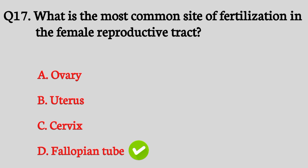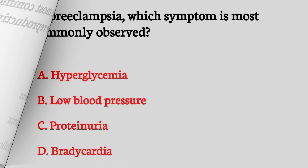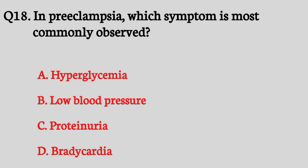Question number eighteen. In preeclampsia, which symptom is most commonly observed? The right answer is option C: Proteinuria.